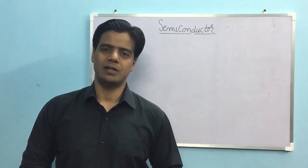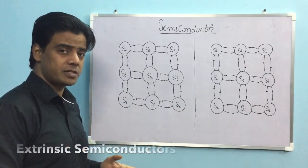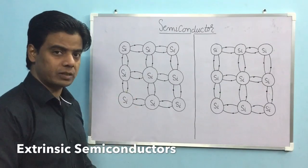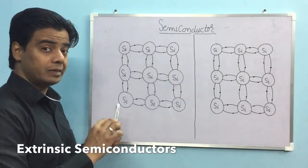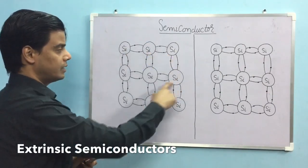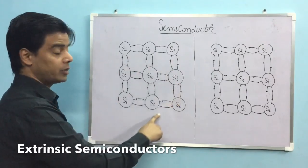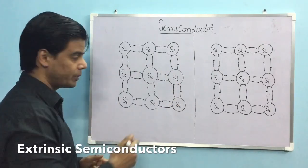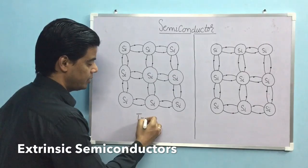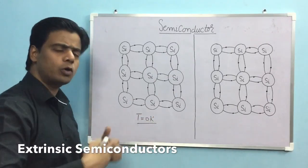So let's start the class. We have an extrinsic semiconductor diagram. This is our intrinsic semiconductor — all the silicon atoms and their electrons are in bonds. Now I am going to say that the temperature is zero, and then I will increase it to a high temperature.